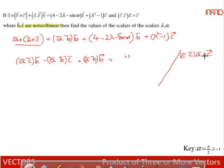Using dot product with c on both sides: (a·c)(c·c) = (c·c). The c·c terms cancel and we get a·c = 1. Let us use that in the equation.